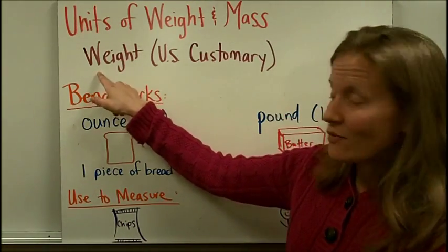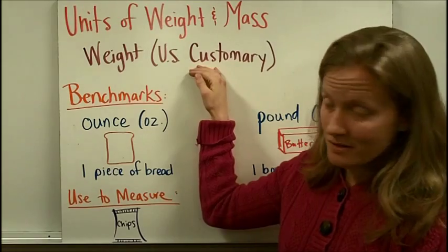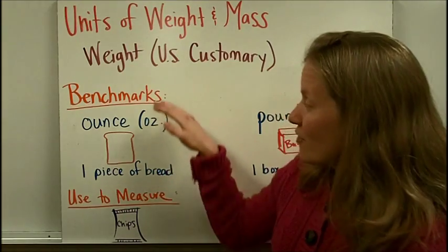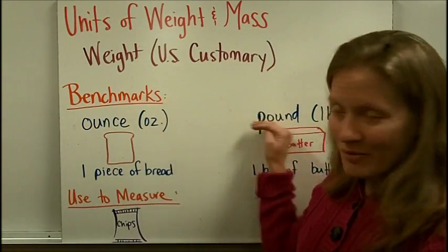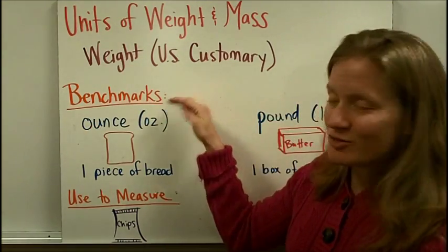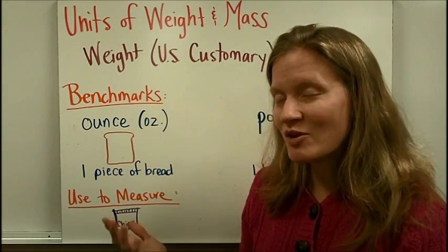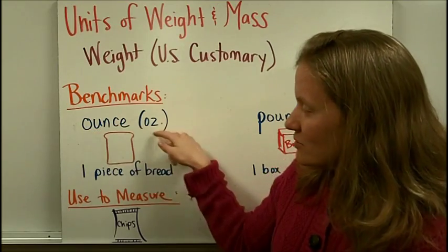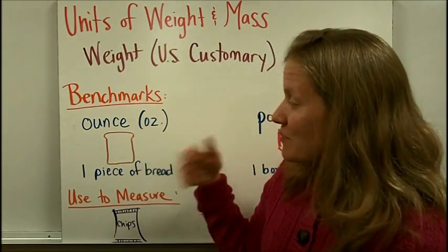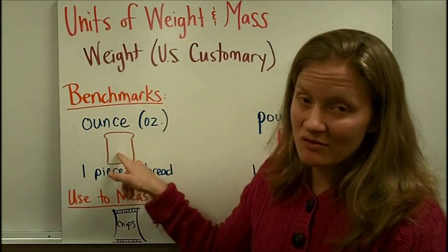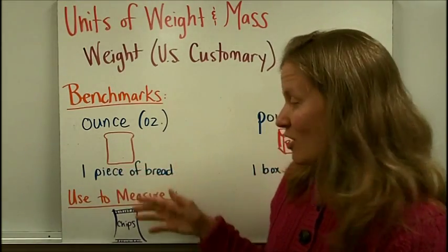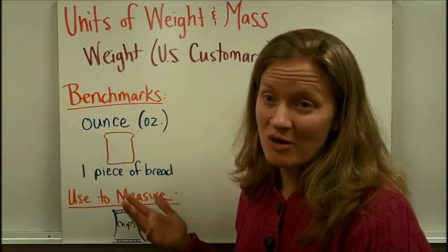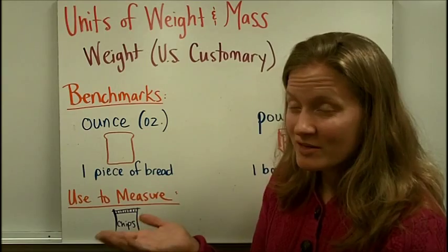The units of weight, which is U.S. customary, are ounces, pounds, and also tons. For the two that we're going to use in class, we're going to talk about benchmarks, which are measurements that you can keep in your mind in order to estimate. An ounce, abbreviated OZ, is about the same weight as a piece of loaf bread. So if you're thinking whether something is more or less than an ounce, you could compare it to how much a piece of bread weighs.